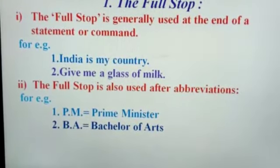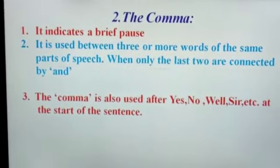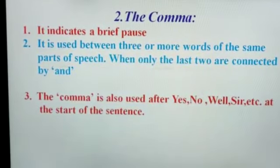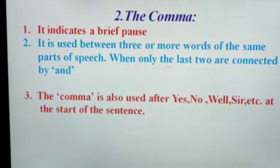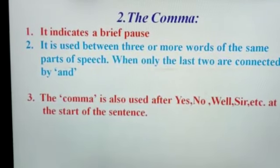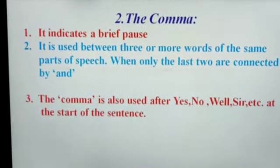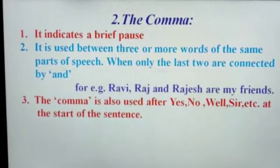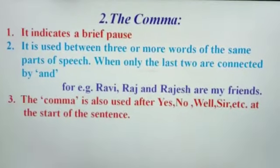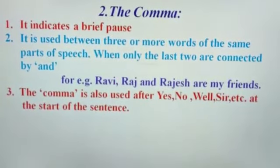Our next punctuation mark is the comma. It indicates a brief pause. It is used between three or more words of the same parts of speech when only the last two are connected by 'and'. For example, 'Ravi, Raj and Rajesh are my friends.' Here, after 'Ravi' there is a comma.